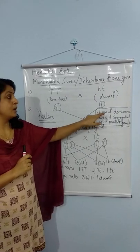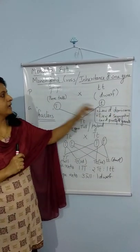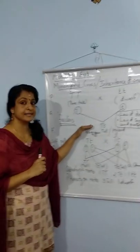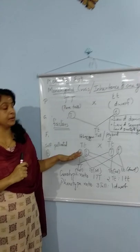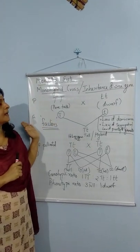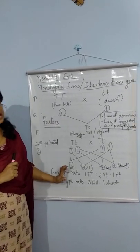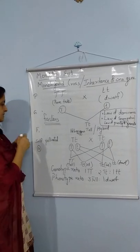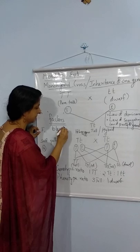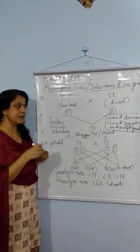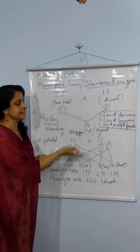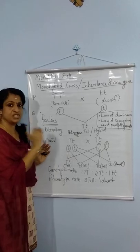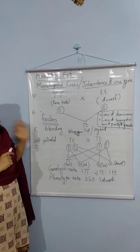The first law is called the Law of Dominance. This law states that when we consider a pair of contrasting characters, only one character will appear in the F1, and that is the dominant character. The other character will appear only in the F2 generation. Mendel also stated that there is no blending of genes — blending means mixing. The reason was that he could get only tall and dwarf plants in the offspring, with no plant of intermediate height. So he concluded that there is no blending or mixing of genes.